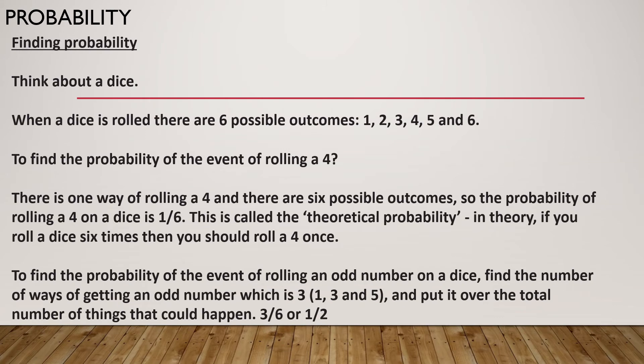So when we're looking at probability, we need to decide what the chance of that event occurring is. The way we find probability is if we go back to our example of a dice. If I rolled a dice, I've got six possible outcomes: I could roll a one, a two, a three, a four, a five, or a six. So to find the probability of the event of rolling a four, there's one way of rolling a four and there's six possible outcomes.